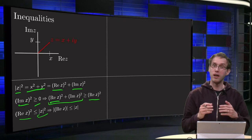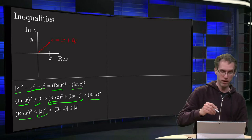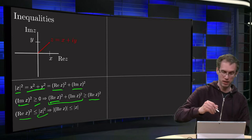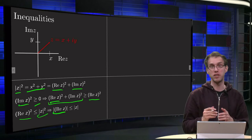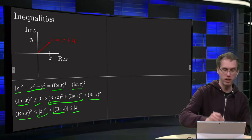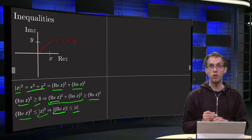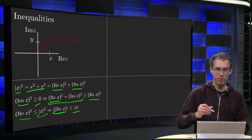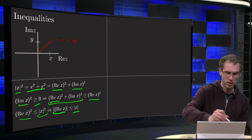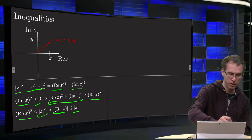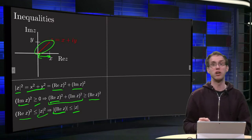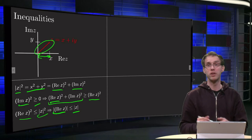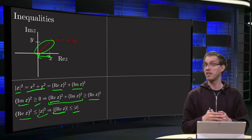Now you can remove the square root if you take the absolute value on the left, so the absolute value of the real part of z is always smaller or equal to the norm of z. You can see that from the picture of course, because the norm of the real part of z is this distance here and it will always be smaller or equal to this distance over there. So from the figure this makes perfectly sense.